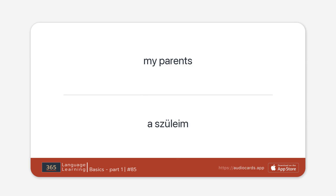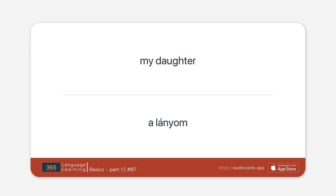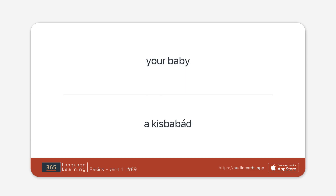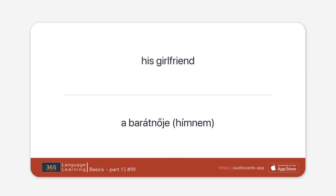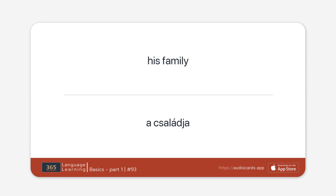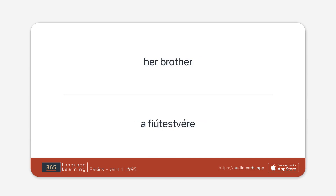My parents. My grandparents. My daughter. Your son. Your baby. Your friend. His girlfriend. His cousin. His family. Her boyfriend. Her brother. Her sister. Its name.